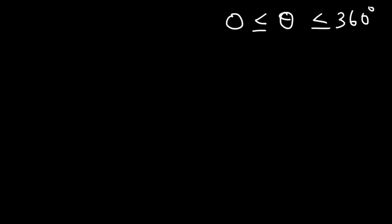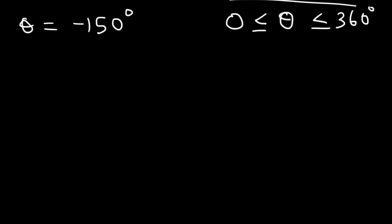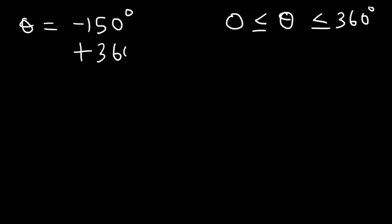Find a coterminal angle between zero and 360 if the angle is negative 150. Now negative 150 is lower than this range, so instead of subtracting by 360, we want to add 360 to negative 150, and this will give us positive 210. So notice that 210 is within the range.